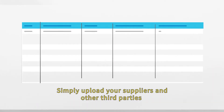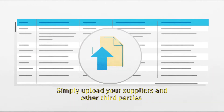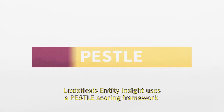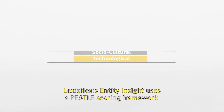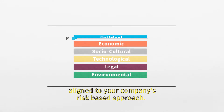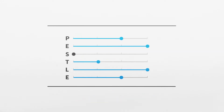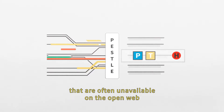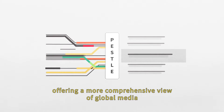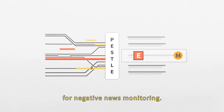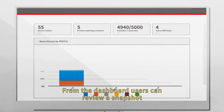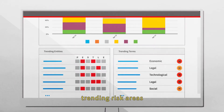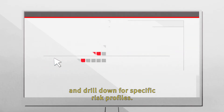Simply upload your suppliers and other third parties, individually or as portfolio lists. LexisNexis Entity Insight uses a PESL scoring framework, aligned to your company's risk-based approach. It aggregates market intelligence and premium news sources that are often unavailable on the open web, offering a more comprehensive view of global media for negative news monitoring. From the dashboard, users can review a snapshot of risk levels, trending risk areas and drill down for specific risk profiles.